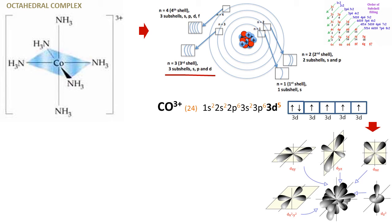We will use an octahedral complex as an example to understand crystal field theory. The central Co ion has various shells and subshells, and this is its electronic configuration. These orbitals are filled as per Hund's rule. In the d orbitals, the dxy, dyz, and dxz orbitals are arranged at 45 degrees with respect to the principal axis, whereas the dx²-y² and dz² orbitals are arranged along the principal axis.